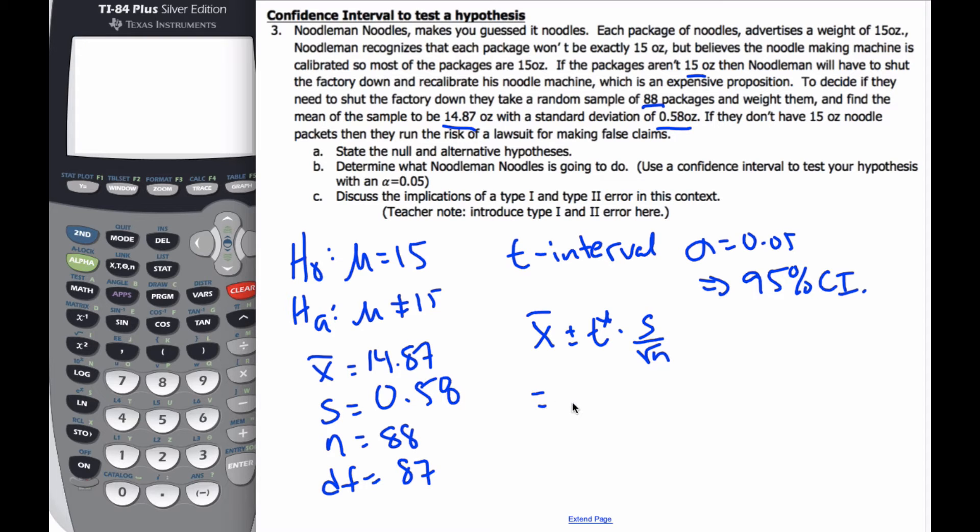That's going to be 14.87 plus or minus t star times 0.58 divided by the root of 88.